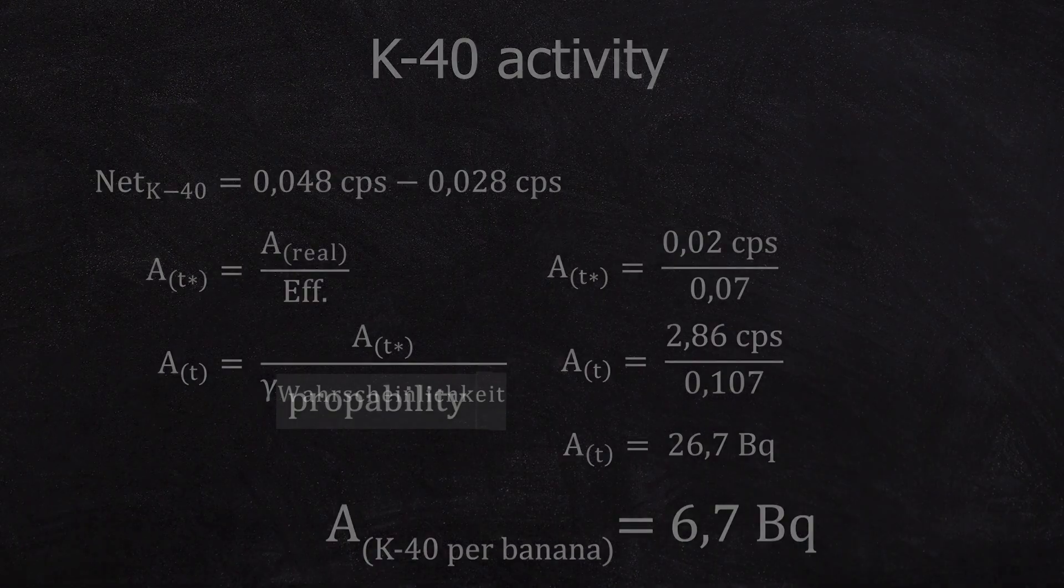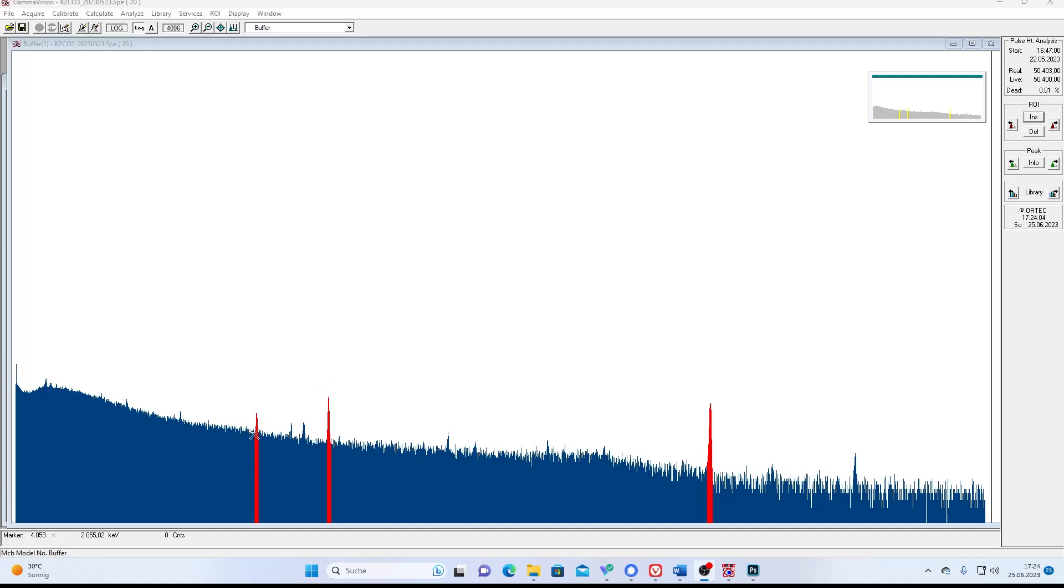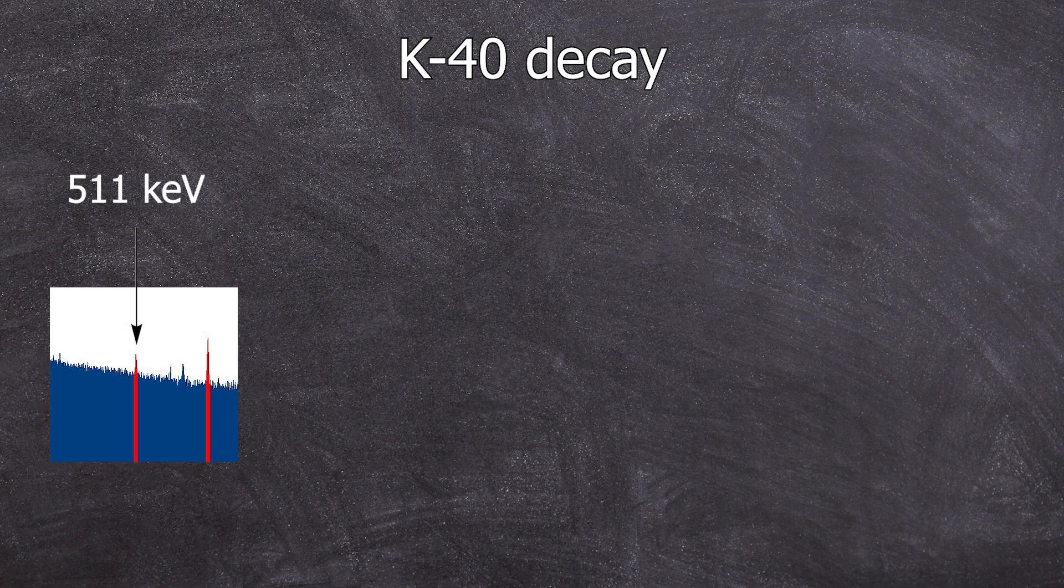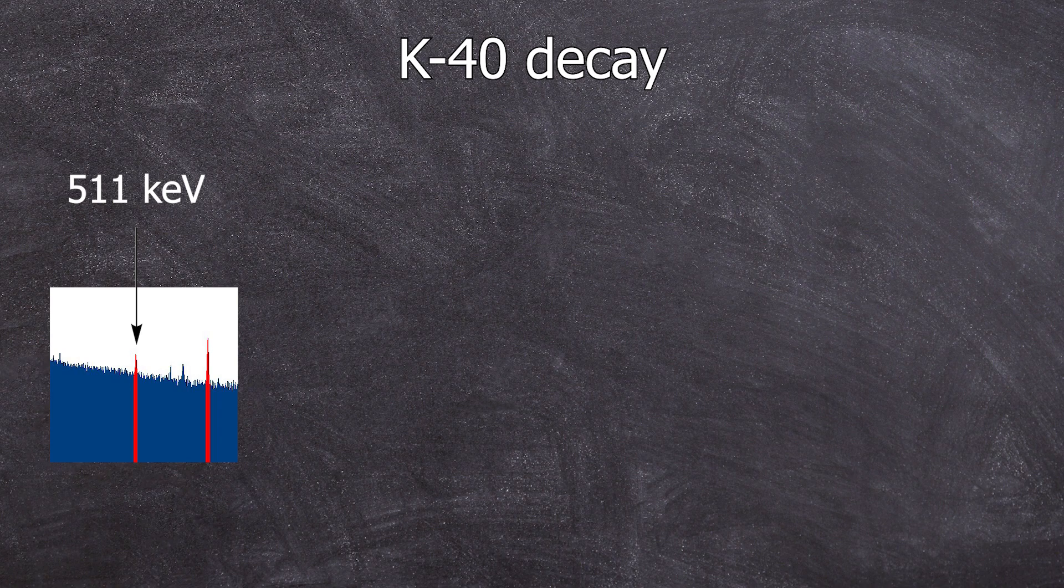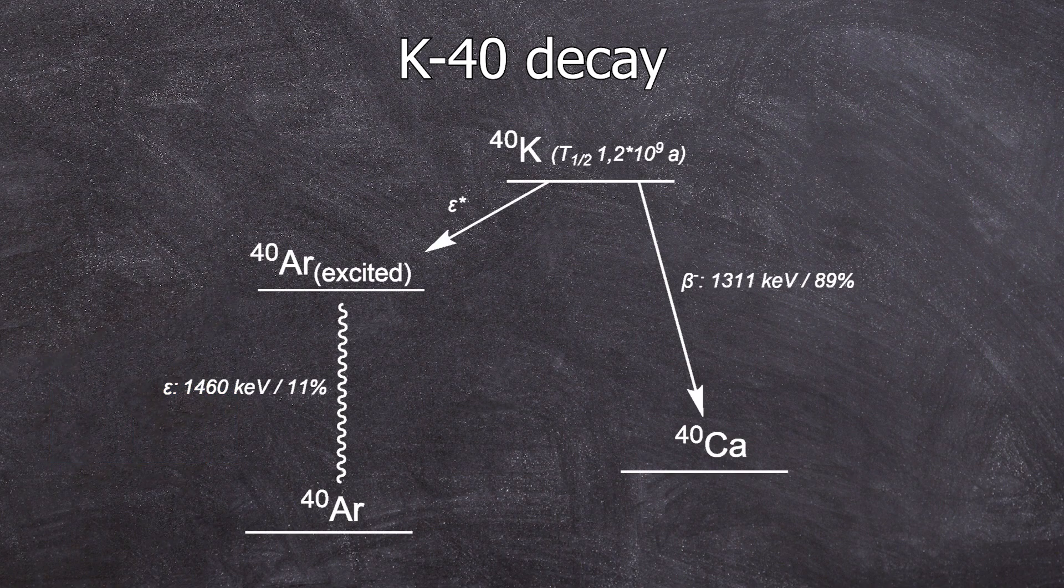Let's talk about the title of the video. I marked the third peak, which is the peak of 511 kiloelectron volts. To explain that, we need to take a closer look at the decay scheme of potassium-40.